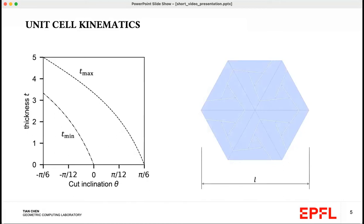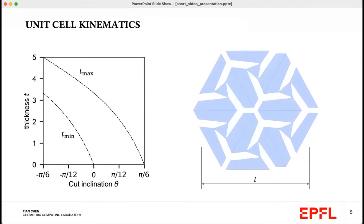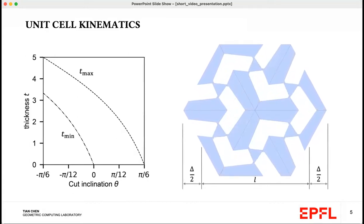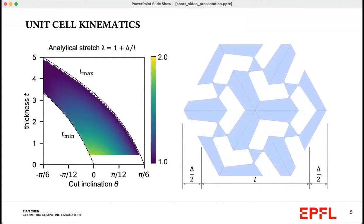Now, if we assume that the width of the unit cell is L, by rotating the inner triangles, we can obtain the open shape. Once we have the open shape, we can define the stretch factor as 1 plus delta over L and plot this on the contour line. We note that the stretch factor ranges from 1 to 2.